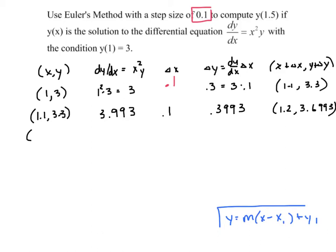Alright. Next. We're gonna... It's 1.2, excuse me. So 1.2 squared multiplied by 3.6993 is 5.327. This is still 0.1. So we multiply. We get 0.5327. So this is 1.3. And we add 3.6993 plus 0.5327. And we get 4.226.